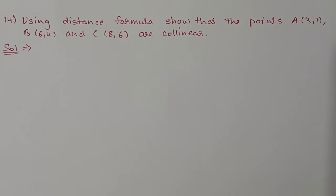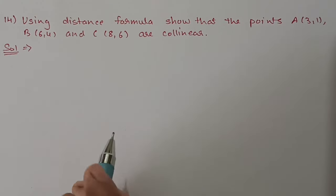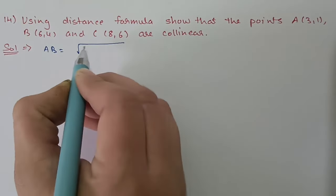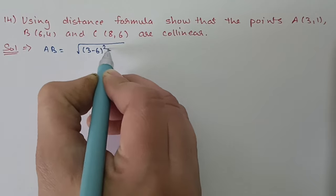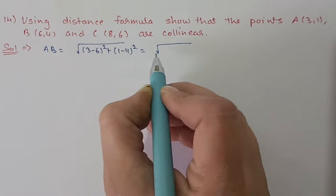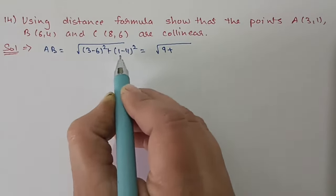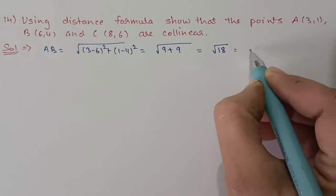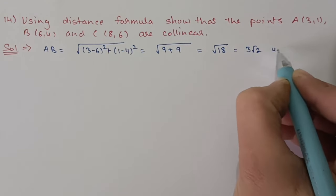Question number 14: Using the distance formula, show that points A, B and C are collinear. We will find the distances between A, B and C and check if they lie on the same line. First, AB = √((3−6)² + (1−4)²) = √(9+9) = √18 = 3√2 units.